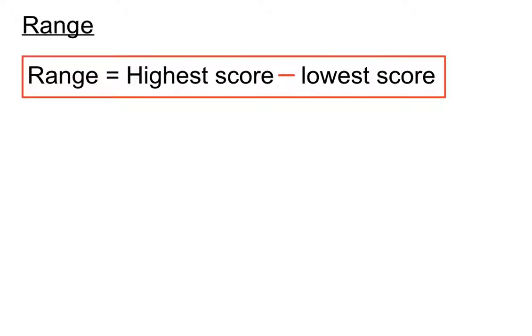The range is the highest score minus the lowest score. That's all it is. Now we have to complete that subtraction to find the range for our final answer, but we find the highest score and the lowest score and we take the lowest score away from the highest score.